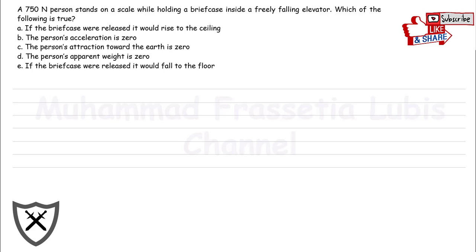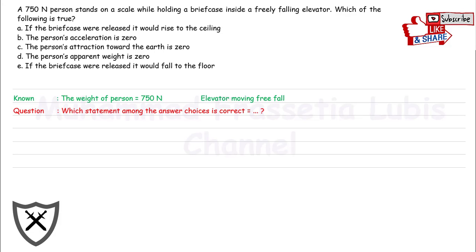Hello guys, this problem aims to find which statement among the answer choices is correct. Based on the problem, we know that the weight of the person is 750 N, and the elevator is moving in freefall. The question is, which statement among the answer choices is correct?